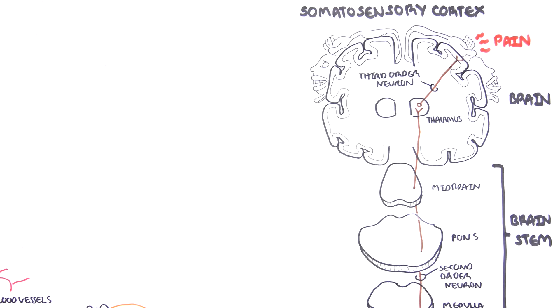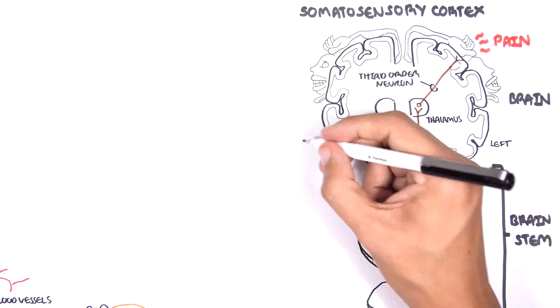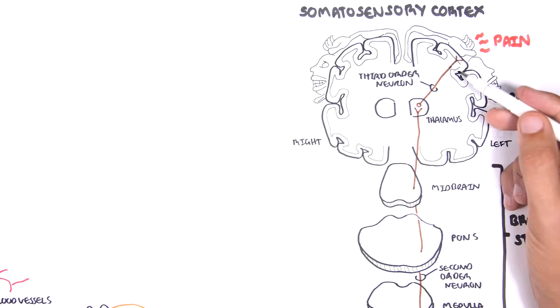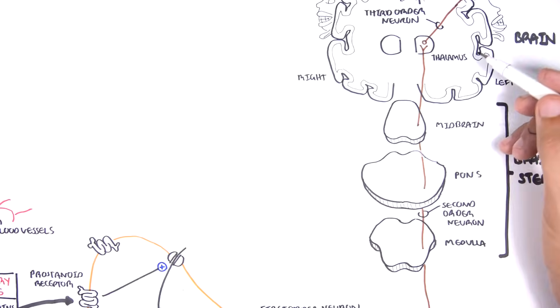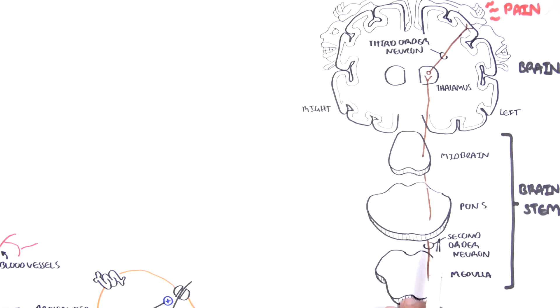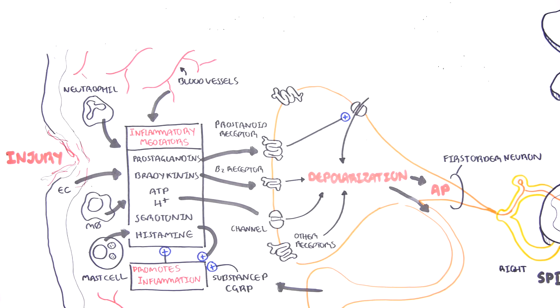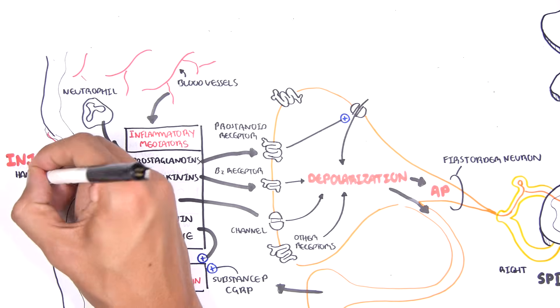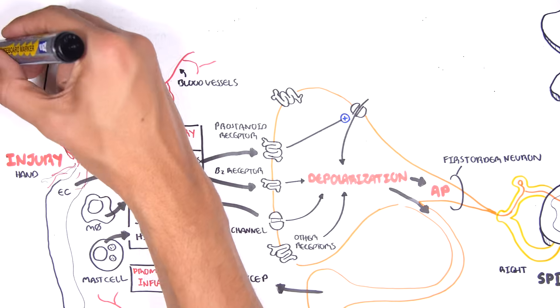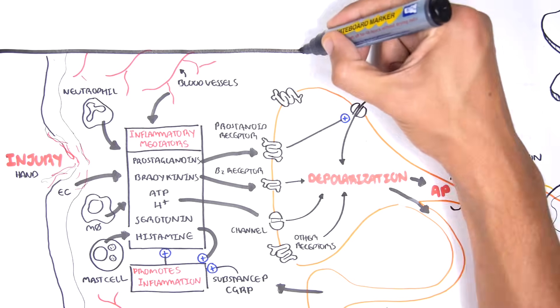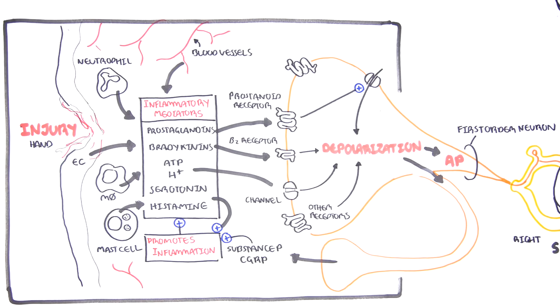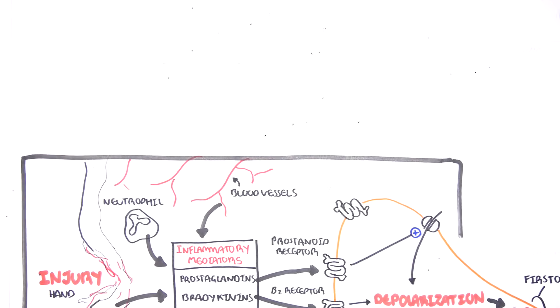Interesting point about sensation: whatever we feel on the right is processed on the left side of the brain and vice versa. So let's go to the very beginning where the pain pathway started. Because prostaglandins are very important players, important mediators of inflammation and thus pain, let us see how it is made.